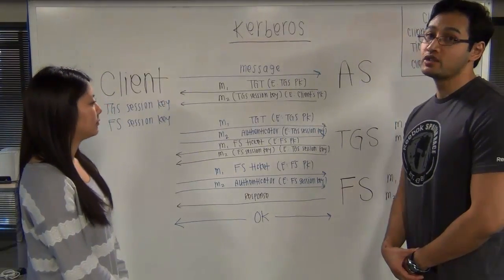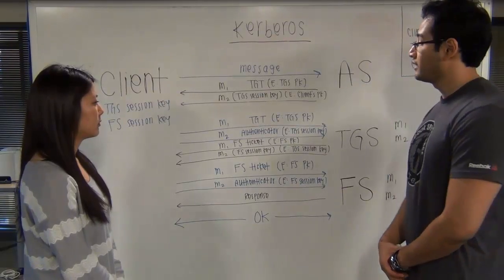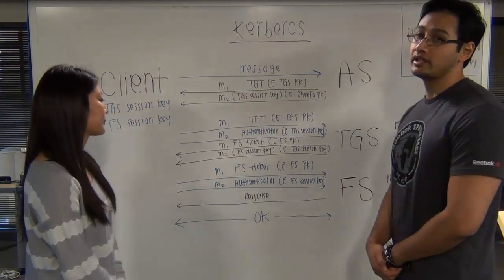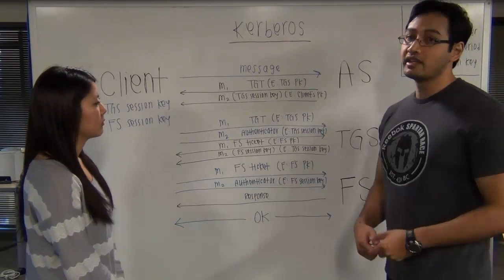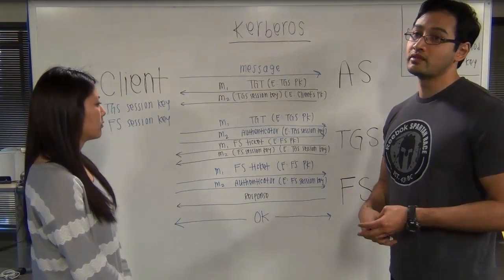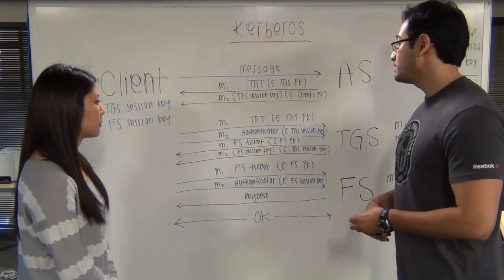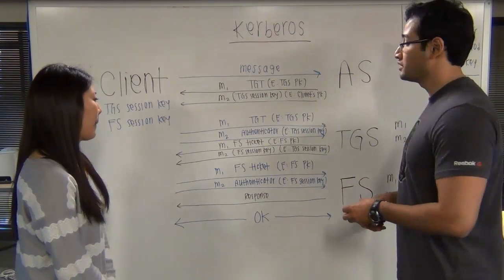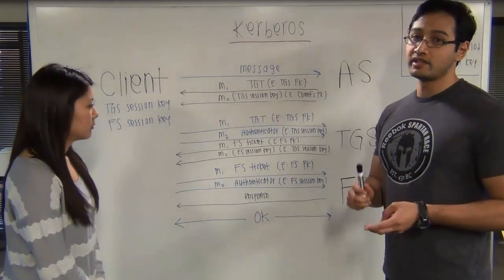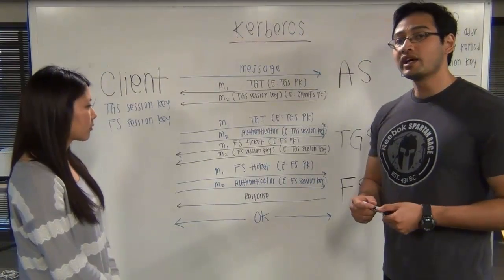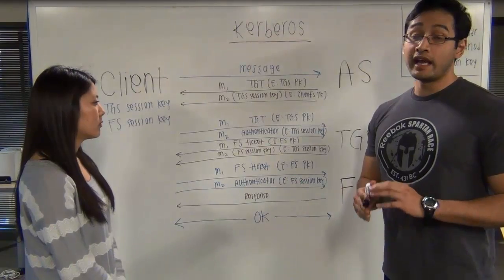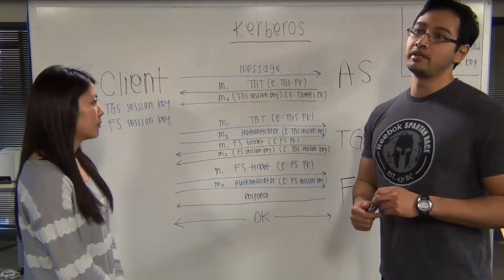The TGS will receive both messages from the client. It will decrypt the TGT using the TGS private key, and once decrypted, it will get the client ID, the client network address, the ticket validity period, as well as the TGS session key. Using the TGS session key, it will decrypt the authenticator and get the client ID as well as the timestamp. It will then check both the client ID and timestamp to make sure that they match and don't exceed the ticket validity period.